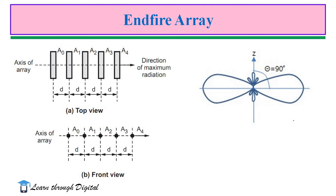This figure illustrates the arrangement of the end-fire array. The antenna elements are equally spaced, similar to the broadside array. The direction of the antenna array axis is also the direction of maximum radiation. In the end-fire array, the direction of maximum radiation is along the direction of the antenna array axis. This is the key difference between the broadside array and the end-fire array. This figure illustrates the front view of the end-fire array and its radiation pattern, with maximum radiation along the array axis direction.